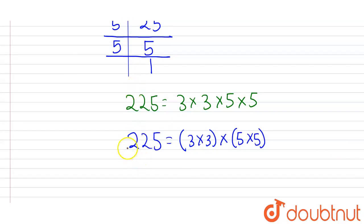Now we'll find the number whose square is 225. For that, we can write it as 225 equals 3 × 5 × 3 × 5.